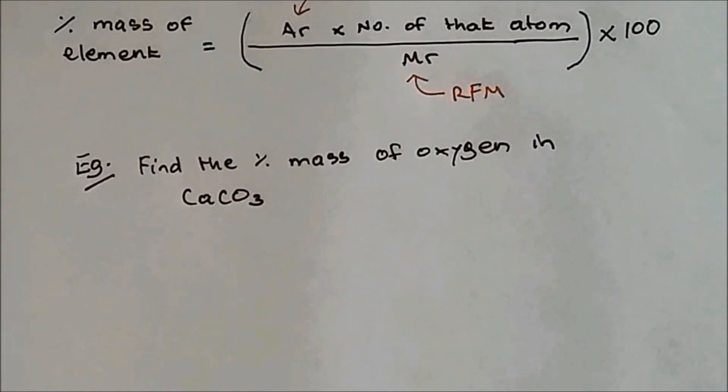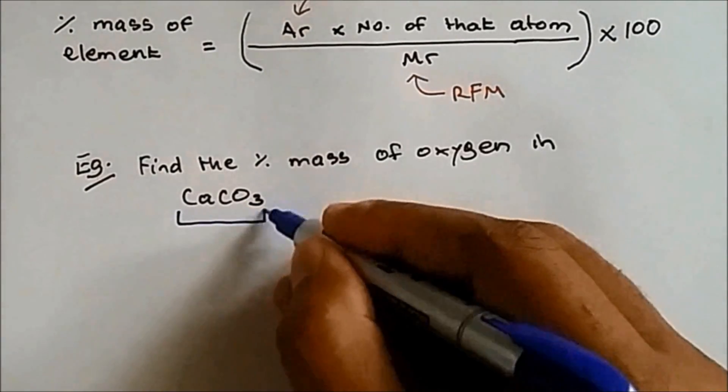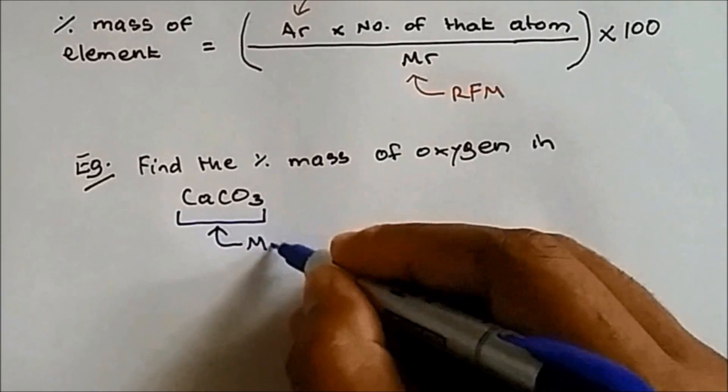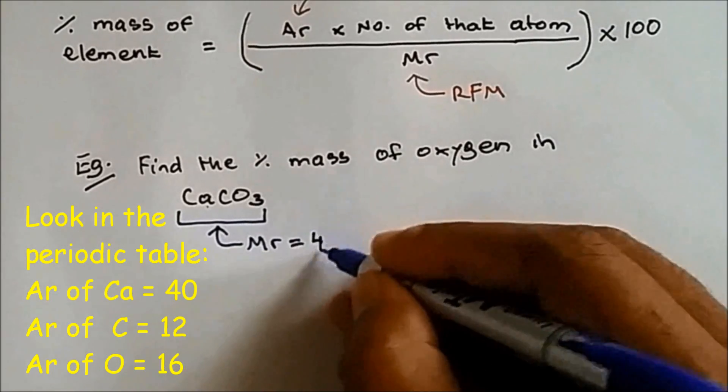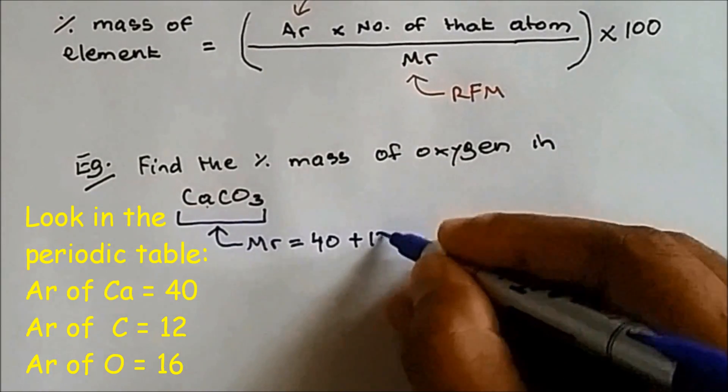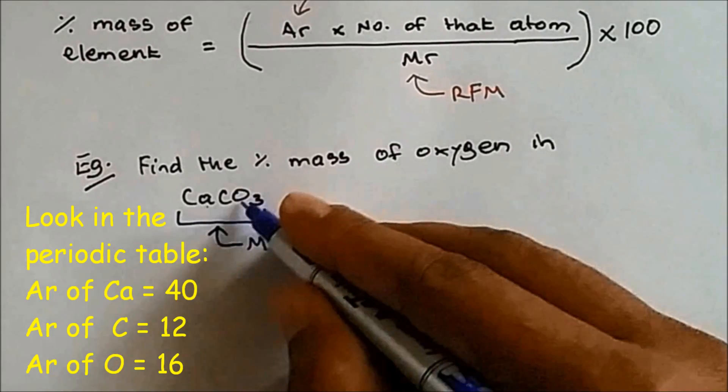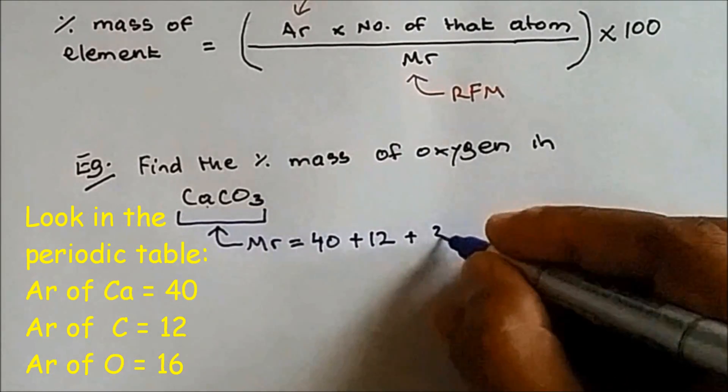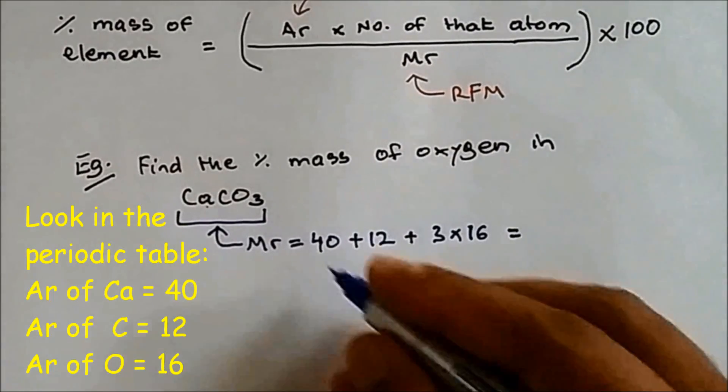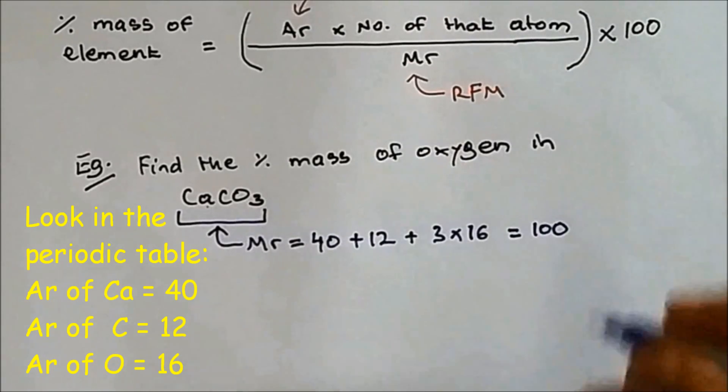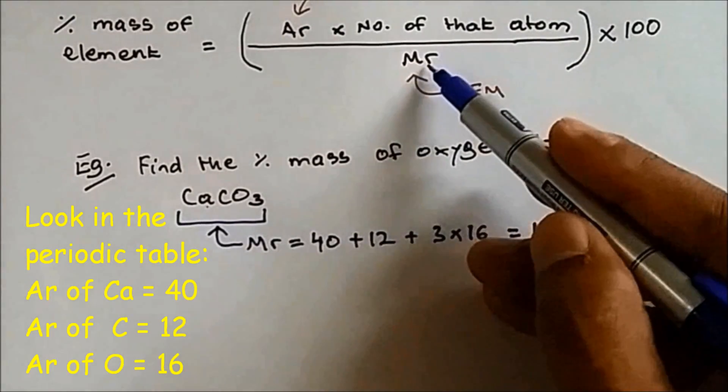In this question you have to find the mass of oxygen in CaCO3, which is calcium carbonate. First of all, what's the MR of calcium carbonate? The AR of calcium is 40, carbon is 12, and oxygen is 16, but we got 3 oxygen so 3 times 16. If we put that in the calculator we will get 100. This is the MR, so we have found this value.